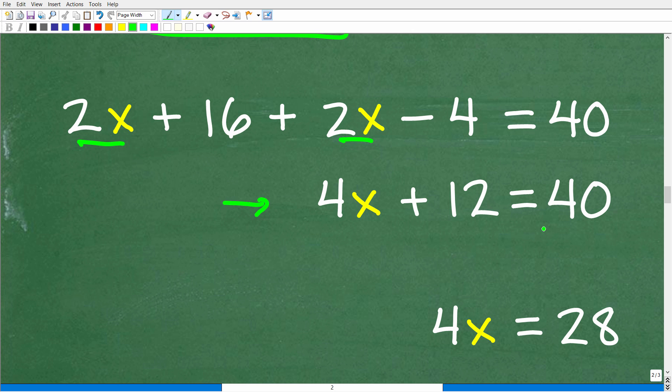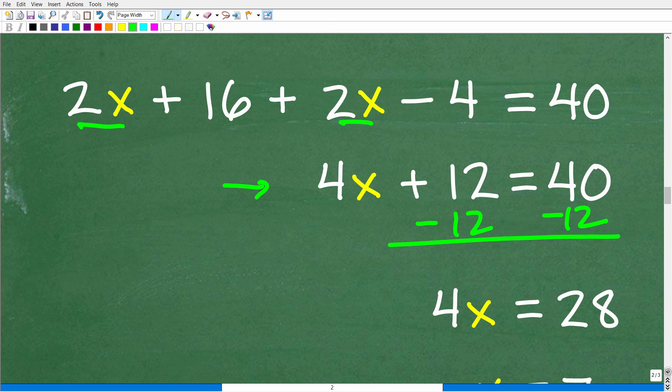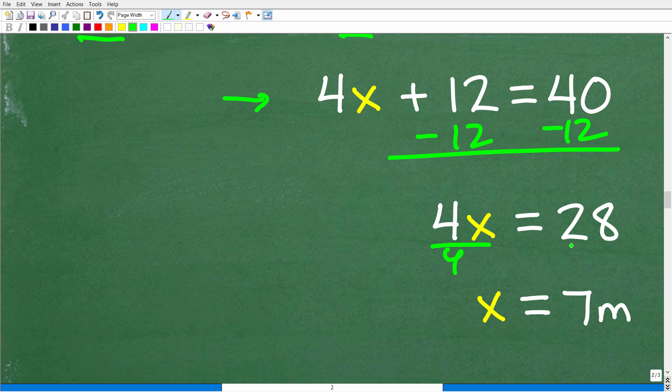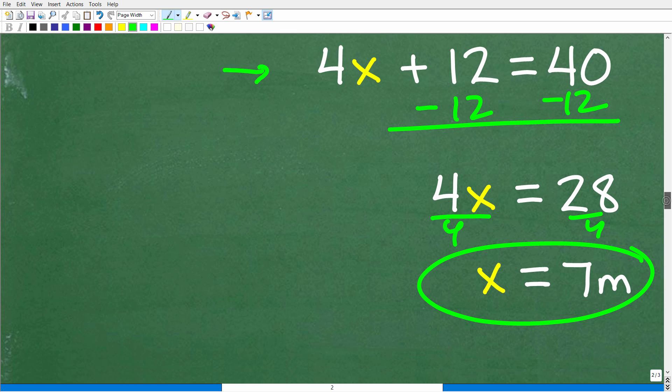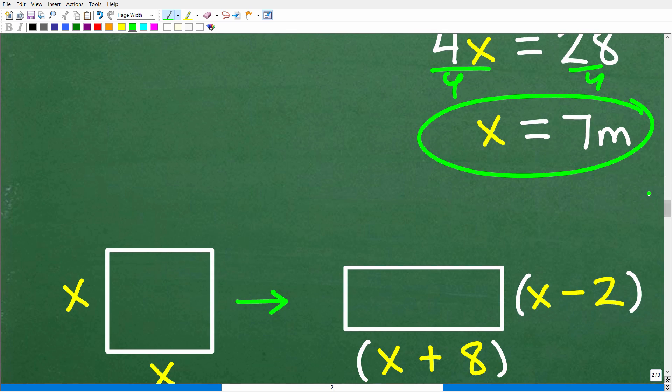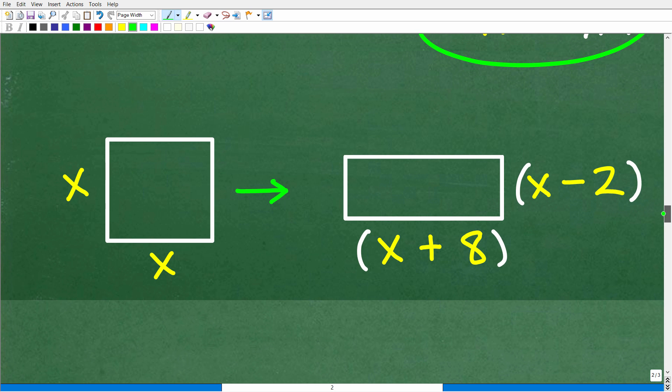All right, so 4x plus 12 is equal to 40. What do we need to do? We have to subtract 12 from both sides of the equation, and we're going to get 4x is equal to 28. And lastly, to solve for x, all we have to do is divide both sides of the equation by 4. So we get x is equal to 7. Now remember, we are dealing with the units of measure meters, right? So x is equal to 7 meters. All right, so what does that mean? Well, let's go back to our original kind of setup here. So remember, the variable x represents the side of this square, okay? So that was the question. What is the side of the square? It's not 7. It's 7 meters.